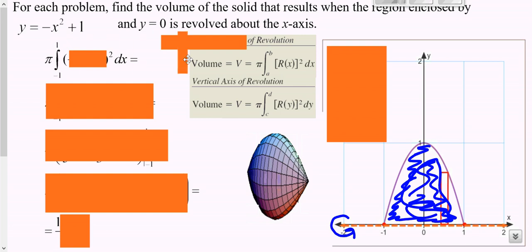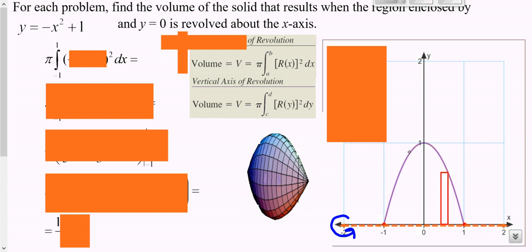Your radius is going to go from your function all the way to your axis of revolution. In this case we go to the top, which is our function, minus the bottom, which is our axis of revolution — zero. So it's basically your function minus zero. Remember for your disk method you need to square that. Now all we have to do is work this out.